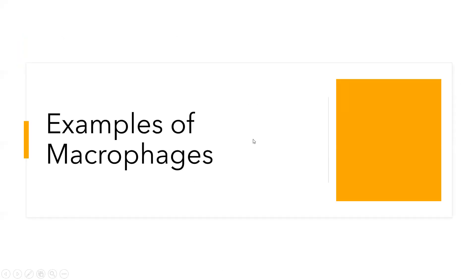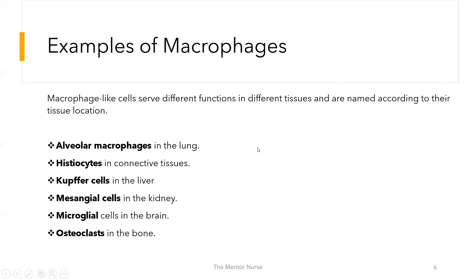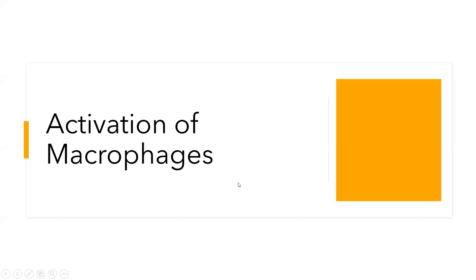There are different types of macrophages depending on their tissue location, and their names differ accordingly. In the lungs they are called alveolar macrophages; in connective tissues, histiocytes; in the liver, Kupffer cells; in the kidney, mesangial cells; in the brain, microglial cells; and in the bone, osteoclasts. All of these are macrophages — the names simply vary by tissue location.